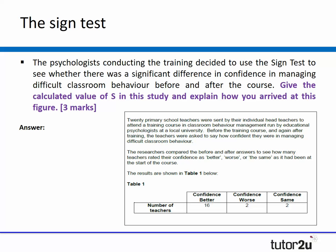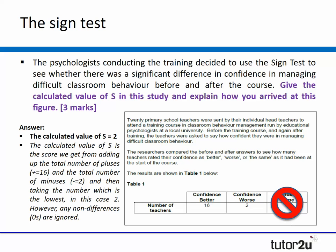Looking at table one, there are two twos in there which make this even easier, but we're going to exclude the scores that remain the same, which means our calculated value of S is two. To get the full marks, you'd say the calculated value of S is the score we get from adding up all of the pluses, which is 16, the total number of minuses, which is two, and then taking the number which is the lowest, in this case two. Any zero differences are ignored, and that's how we'd get our full marks very easily.